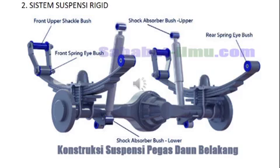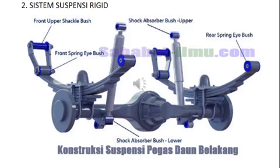Bagian-bagiannya: ada shock absorber, kemudian ada leaf spring atau pegas daun. Di bagian ujung pegas daun ada front upper shackle, ada shackle-nya, kemudian ada spring hanger, dan ada juga bumper. Itu adalah bagian-bagian dari sistem suspensi rigid tipe pegas daun paralel.